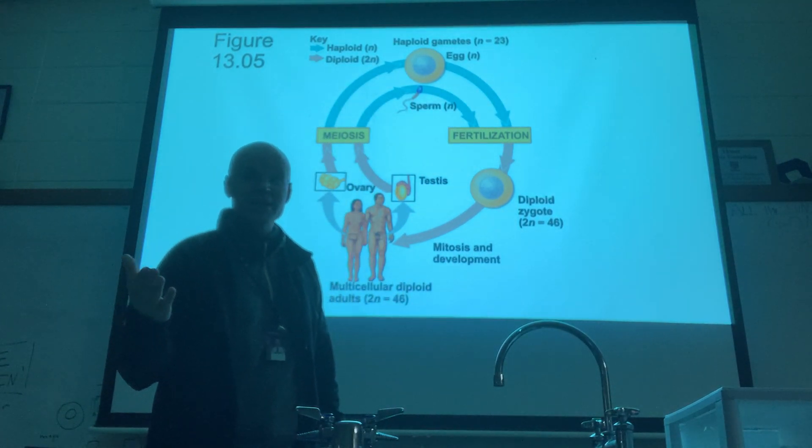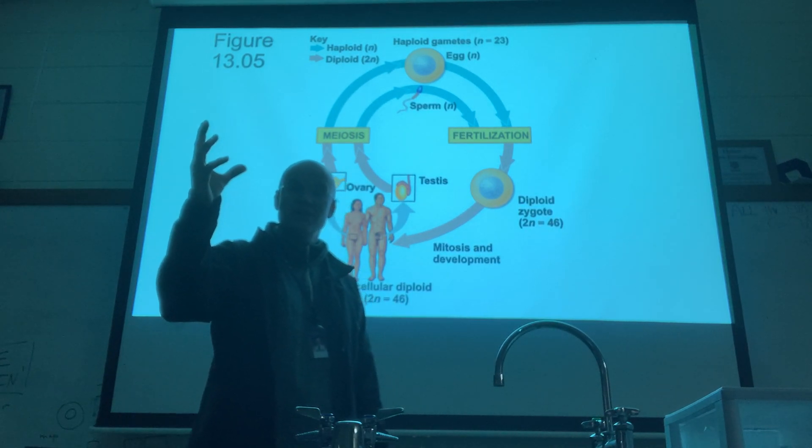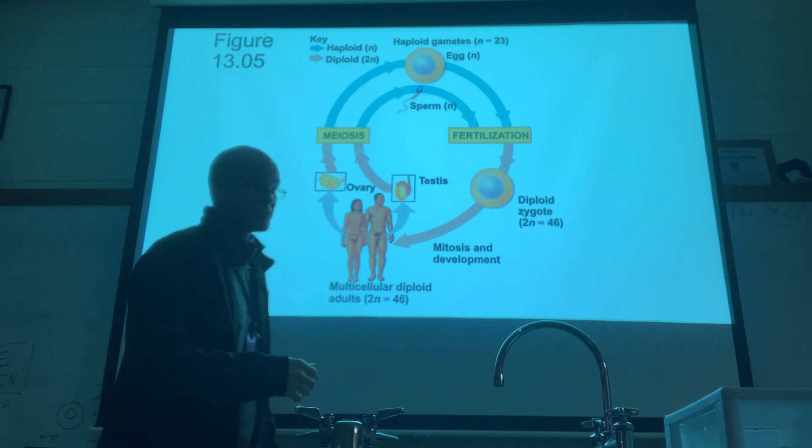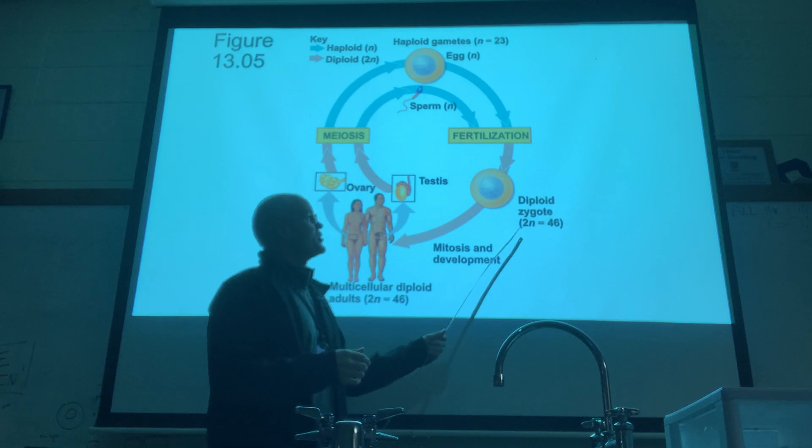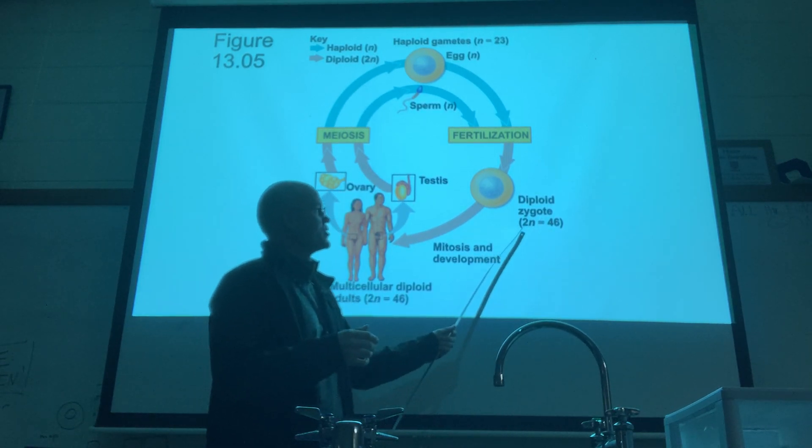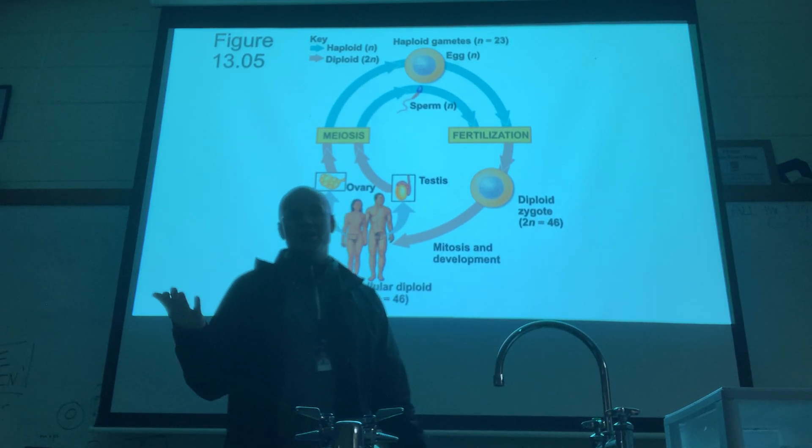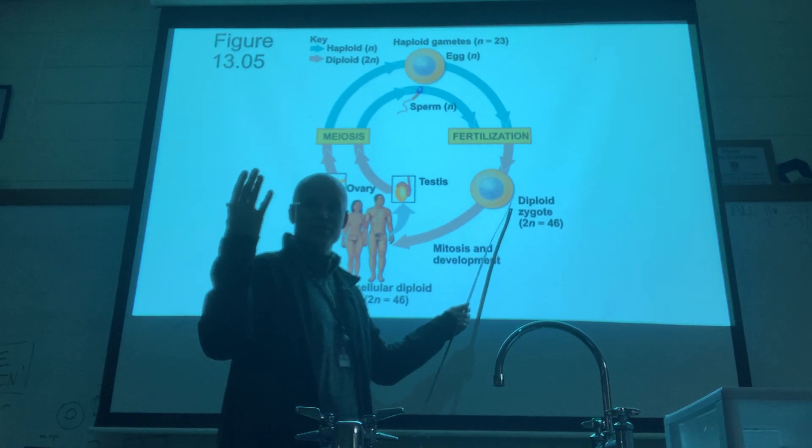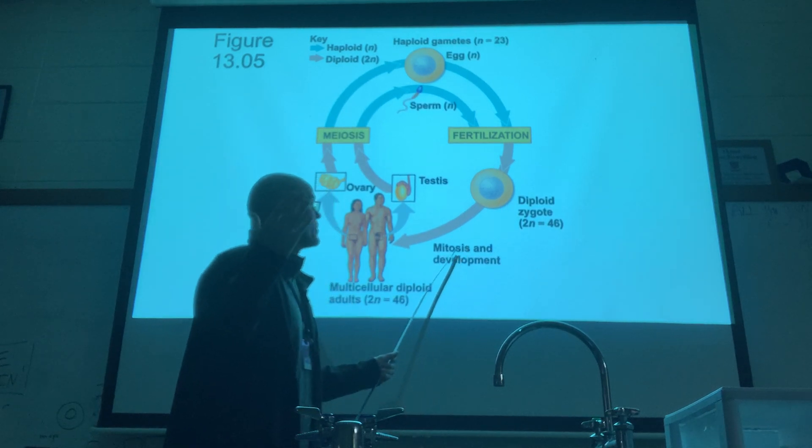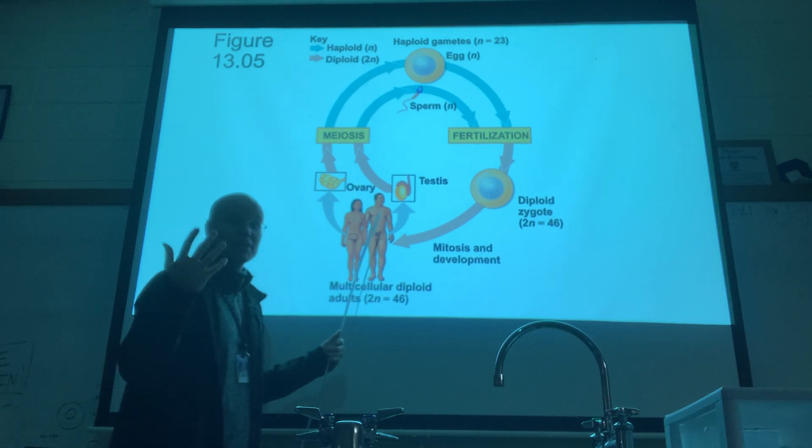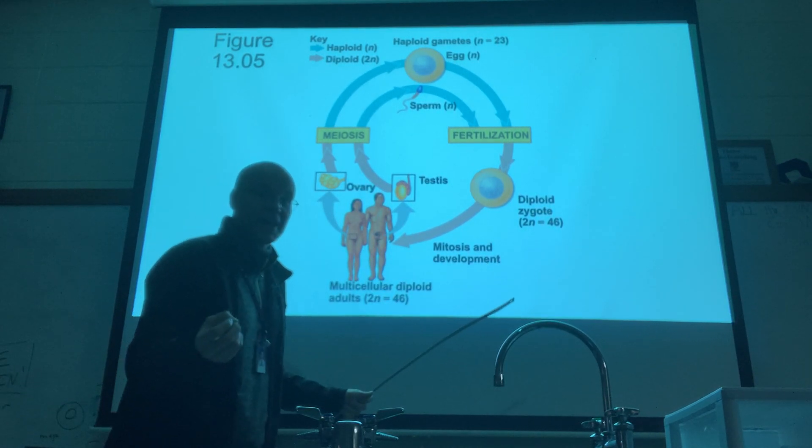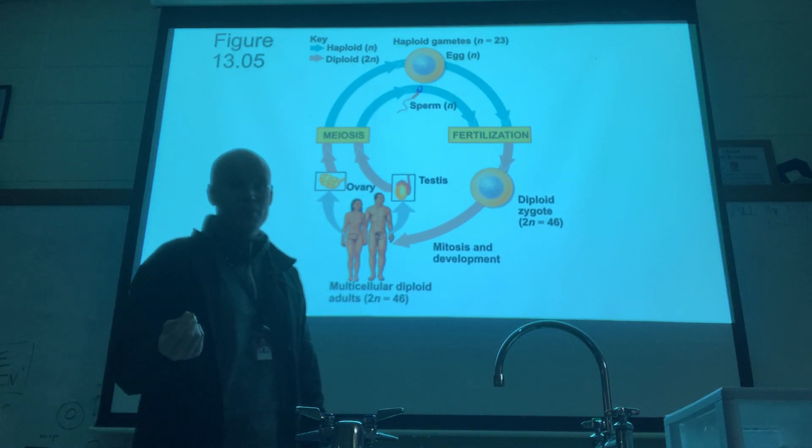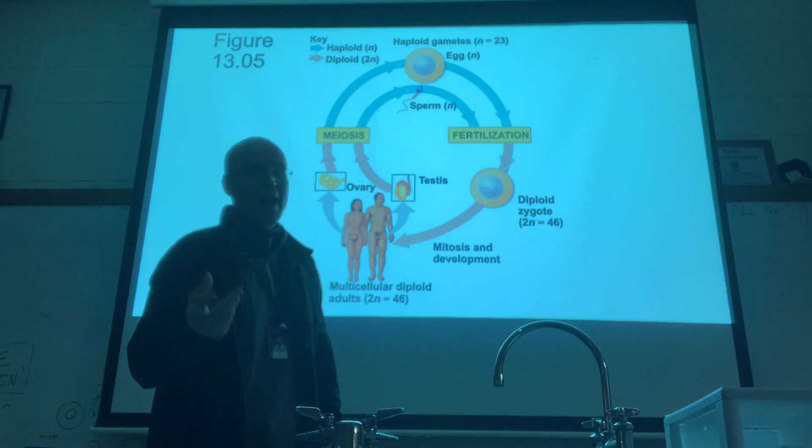Mitosis is simply taking a cell and making two copies of that cell once they divide during cytokinesis. You see this notation here: 2n equals 46. That 46 is how many chromosomes you have in the original cell, the zygote that you once were. And thanks to mitosis, you are now billions and billions of cells. Each one has a nucleus, and inside every one of those nuclei are 46 chromosomes.